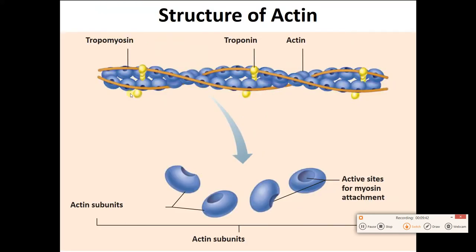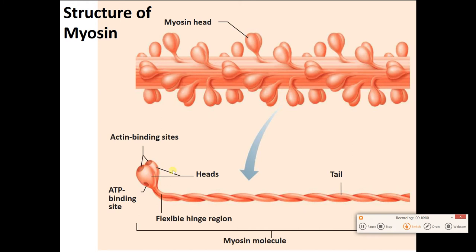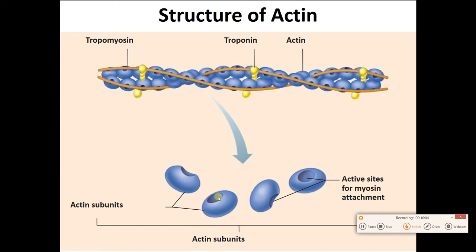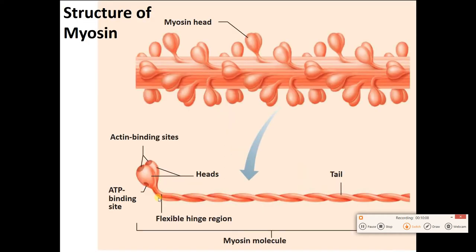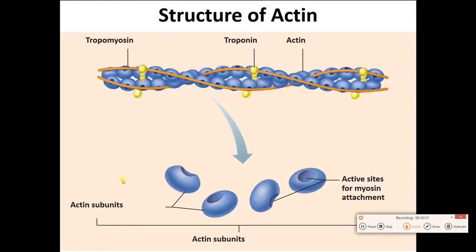Now let's look at the thin filament, which is made of individual molecules of actin. Actin is kind of globular, kind of spherical, and actin has these sites for myosin to grab onto. If the myosin head grabs onto the actin at a little divot, then what's going to happen is the bendy region is going to pull and the muscles are going to end up contracting. However, there's another protein — this ribbon-like brownish protein is called tropomyosin, which covers up the binding site for myosin. So as long as tropomyosin is sitting on top of actin, myosin can't grab onto it and the muscle can't contract.